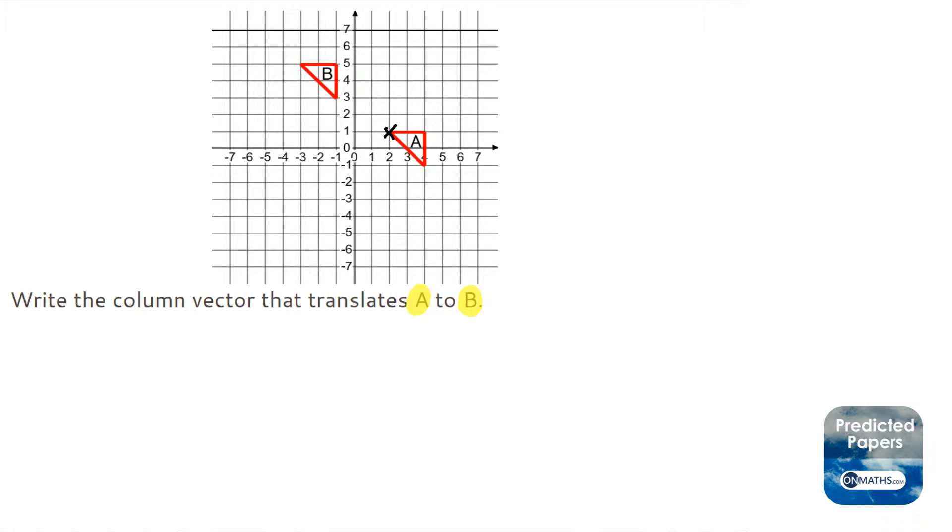And I'm going to see how many jumps I need to get in line with the same point on B. So if I plot on the same point on B, the top left point. So I'm going to do left first, so 1, 2, 3, 4, 5.